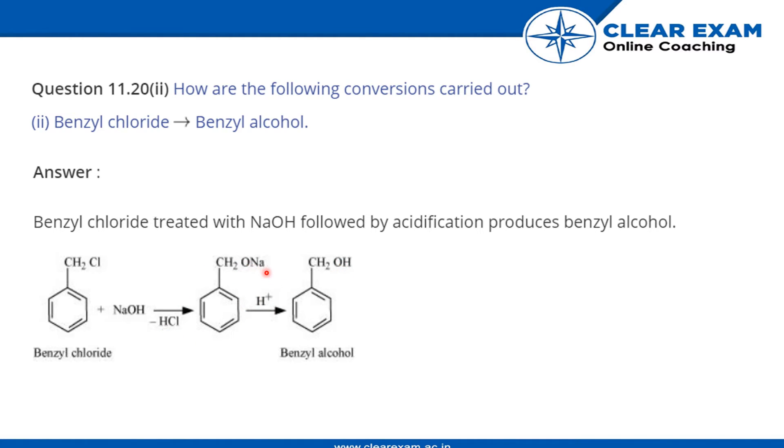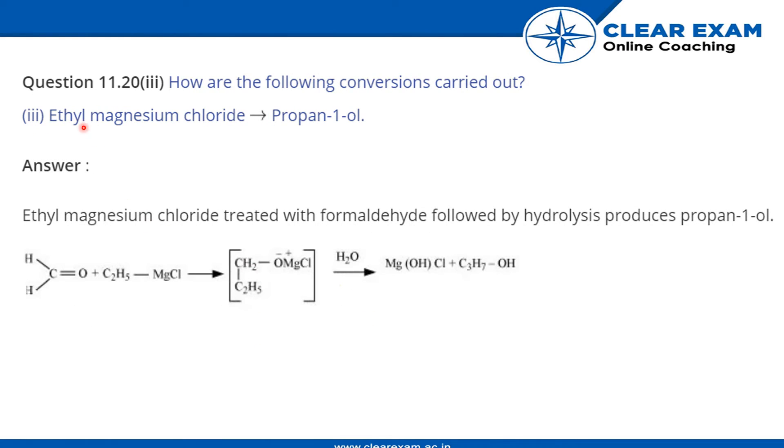Ethyl magnesium chloride to propan-1-ol. This is methanal when reacted with ethyl magnesium chloride. First, this intermediate forms, then we react it with water, then Mg(OH)Cl plus propan-1-ol is formed.